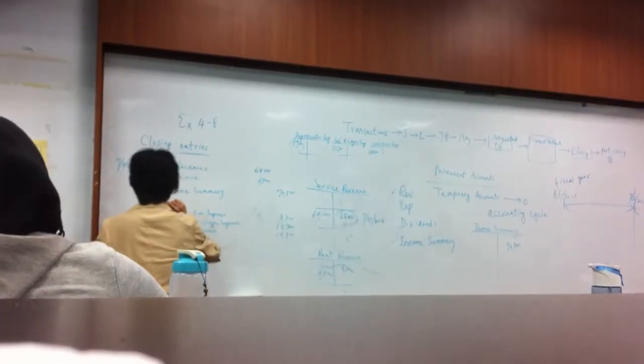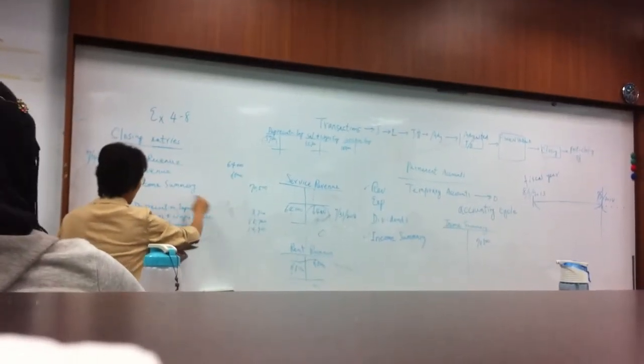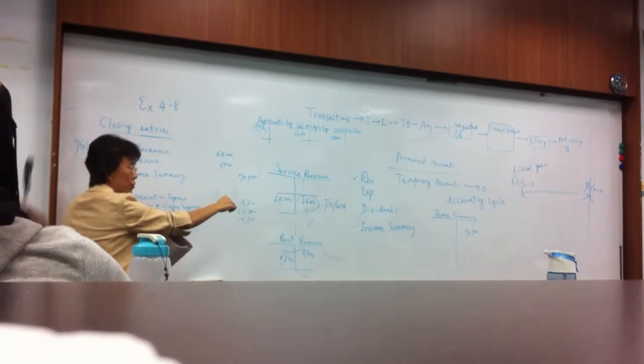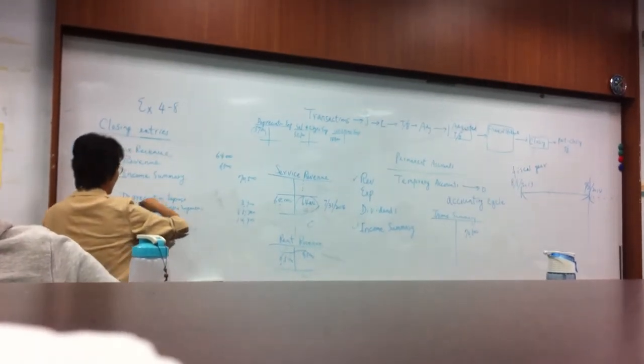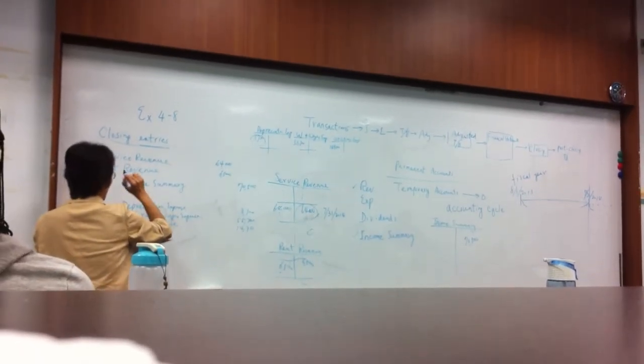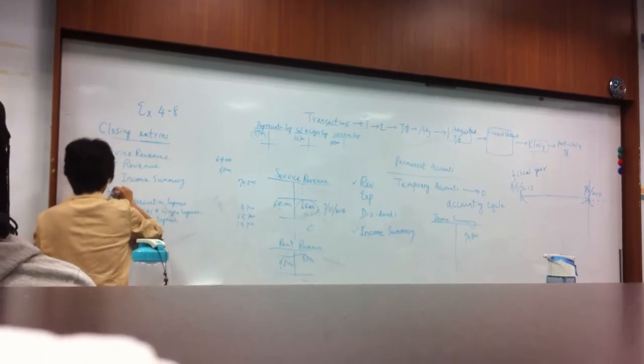Okay and what do we put on the debit side? This is not journal entry right, so this is just a part of that so you have to have this debit side. So we still use this income summary here.